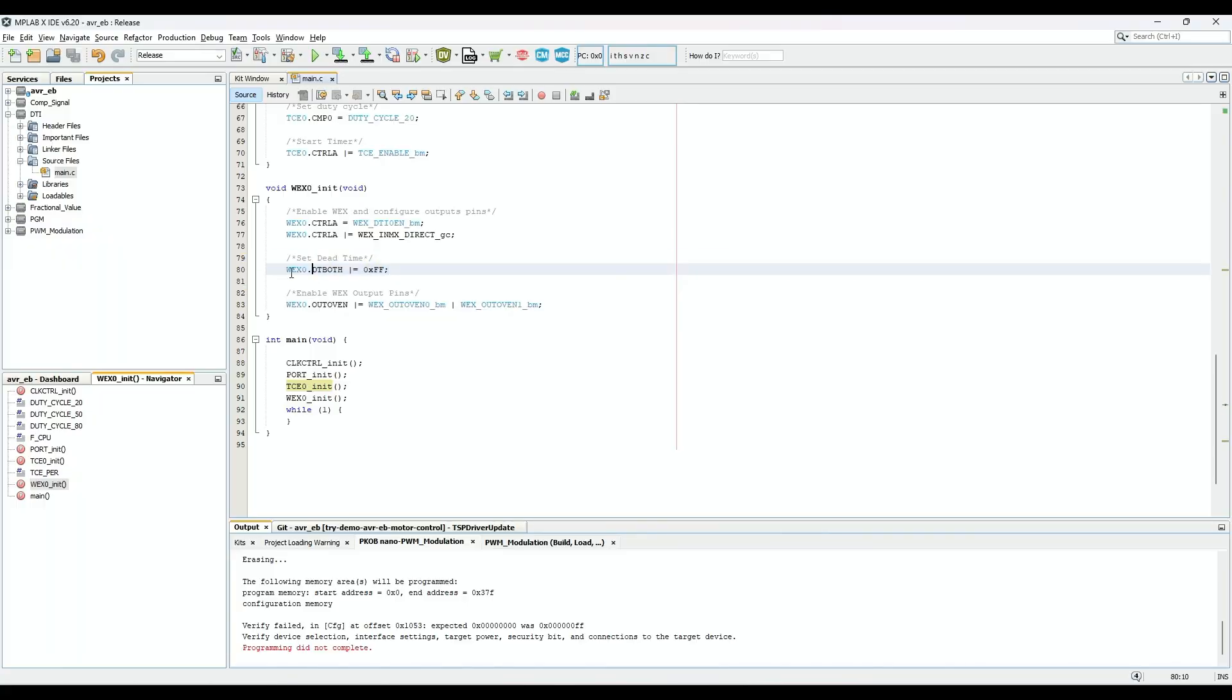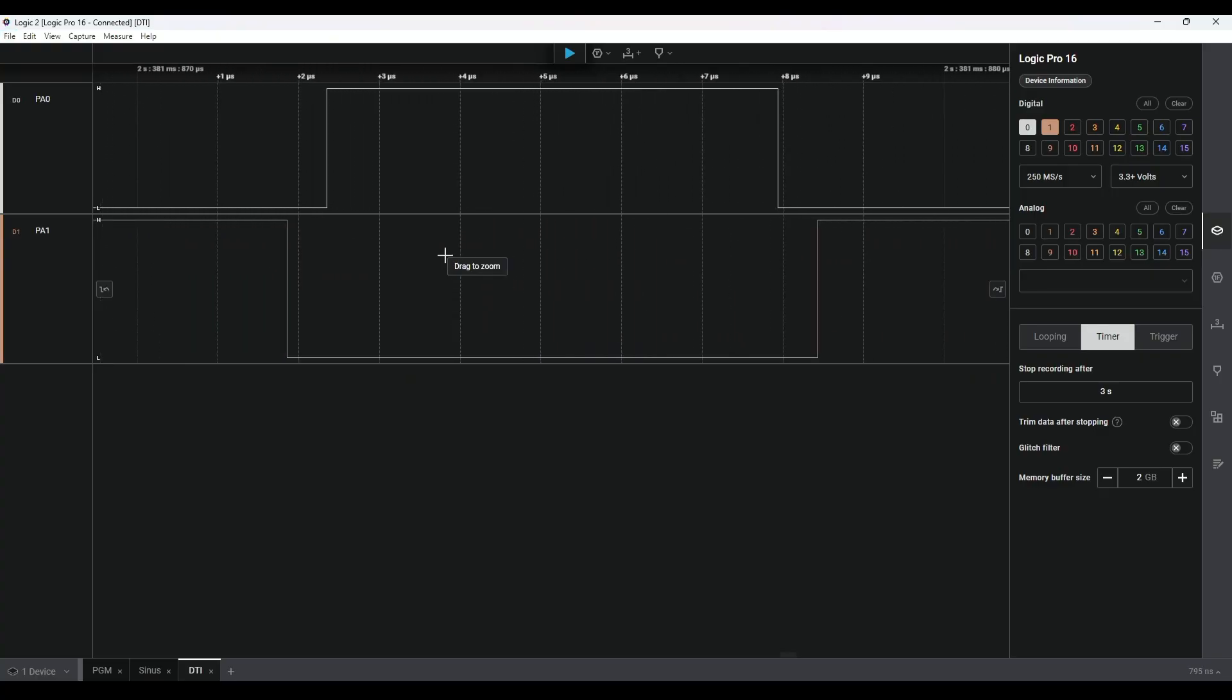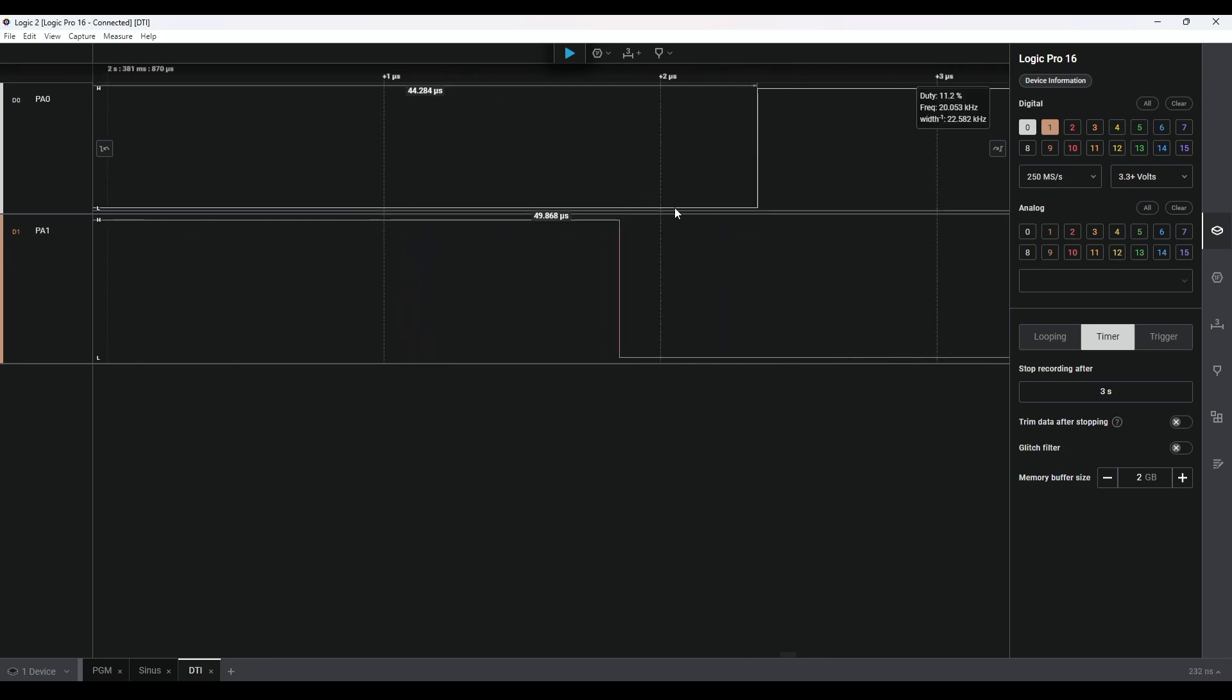The waveform extension also has built-in dead time units. This means that we can insert dead time into the original signal and the inverted signal to create a non-overlapping signal. This is useful when you're controlling H-bridges to avoid shoot-through. And by having it built into the hardware, we can reduce program complexion and secure protection.